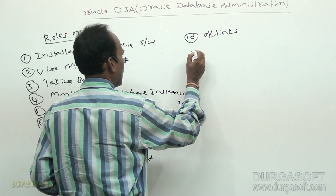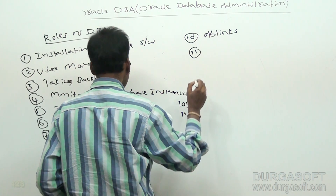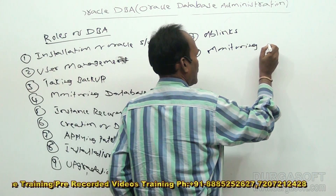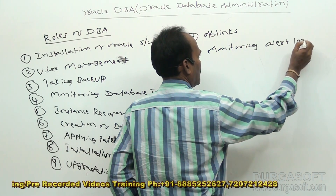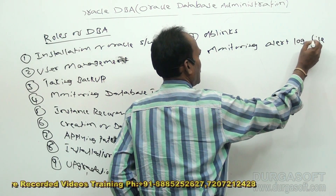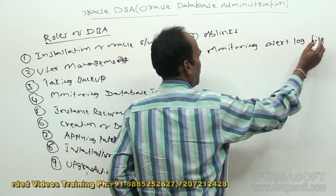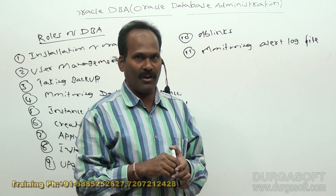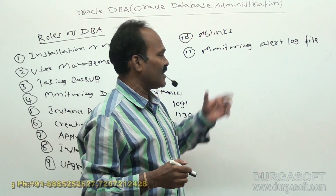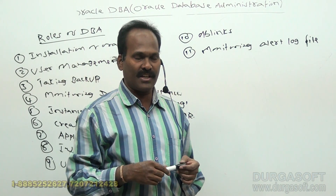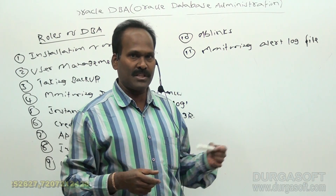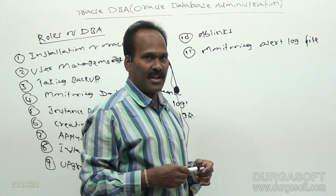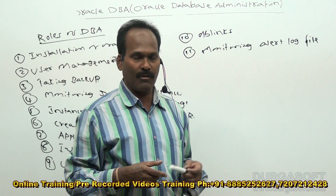The next responsibility is monitoring alert log files. An alert log file contains complete information and diagnostics of a database. Whenever some files are filled — for example, redo log files — all the diagnostic information is stored in the alert log file. It is the responsibility of the database administrator to check the alert log file, identify errors such as filled data files or redo log files, and rectify them.